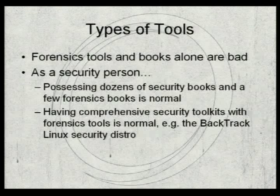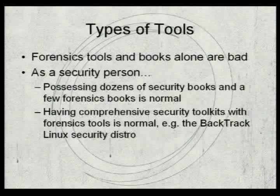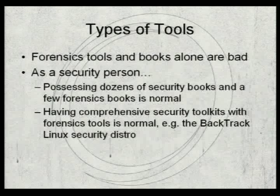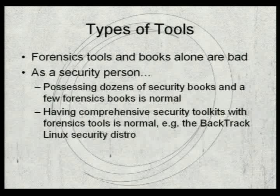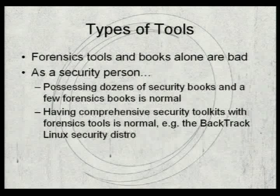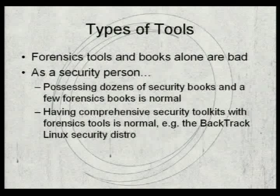Forensics tools and books alone are bad. If the only thing you have at your house is a bunch of tools and books on anti-forensics, and someone comes and kicks in your door, that's the kind of stuff that will be taken in as evidence. Even if you're doing legitimate work, this could still be used as indirect or circumstantial evidence. The book didn't commit the crime — just because you're in that particular mindset.